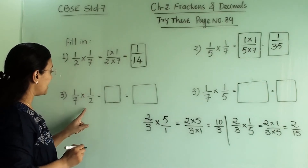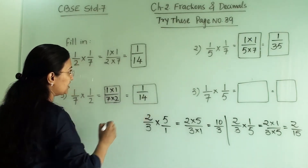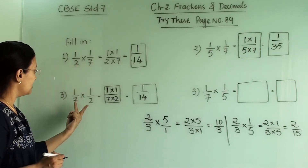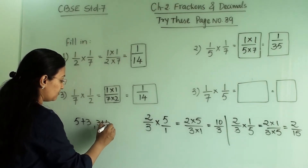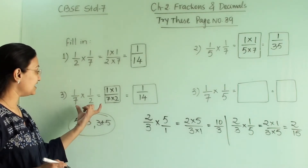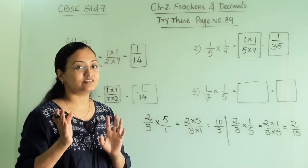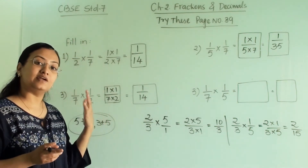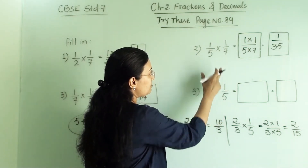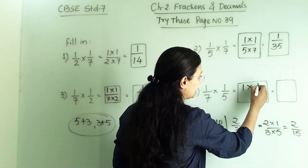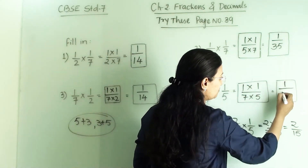Now 1/7 multiplied by 1/2: so 1 into 1 divided by 7 into 2, and the answer is 1/14. You can see that even if we have reversed the order our answer is the same — just like 5 plus 3 and 3 plus 5 give the same answer. Similarly in multiplication, the order does not matter. Now 1/7 multiplied by 1/5: these are the same numbers with only the order reversed, so we get 1 into 1 divided by 7 into 5, which gives 1/35.